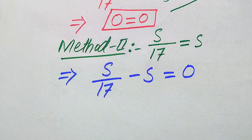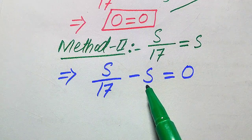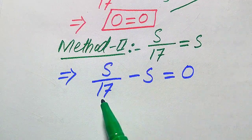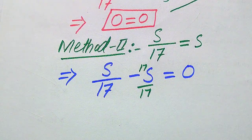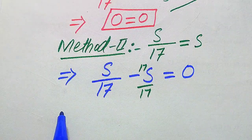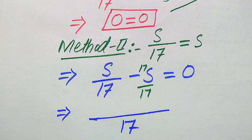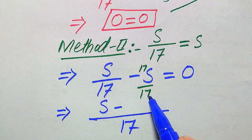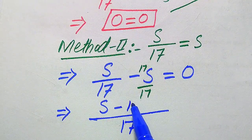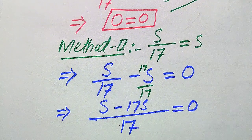The denominator of the first term is 17, but the denominator of the second term is 1. To make both denominators the same, we multiply and divide the second term by 17. Now both terms have denominator 17, so we take the LCM. Dividing 17 by 17 gives 1 for the first numerator and −17 for the second, giving (s − 17√s) / 17 = 0.